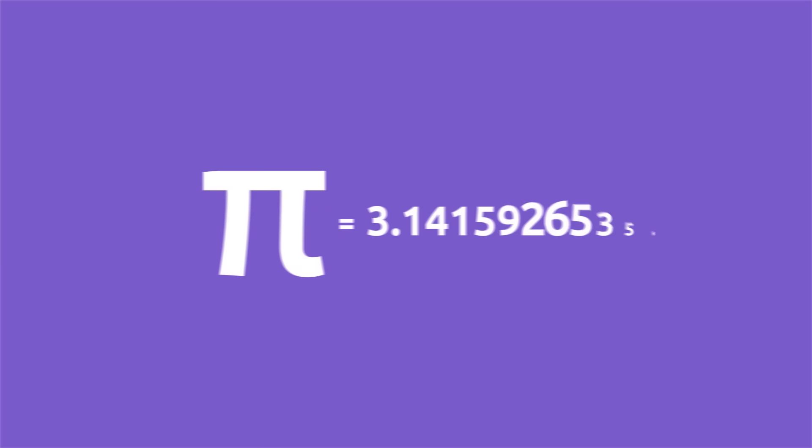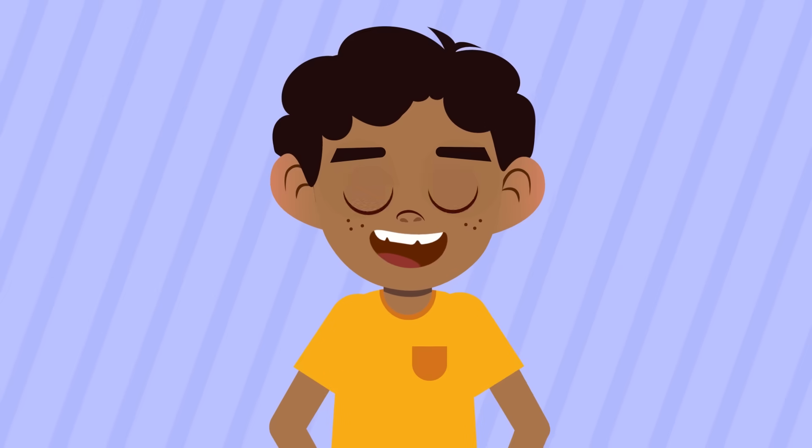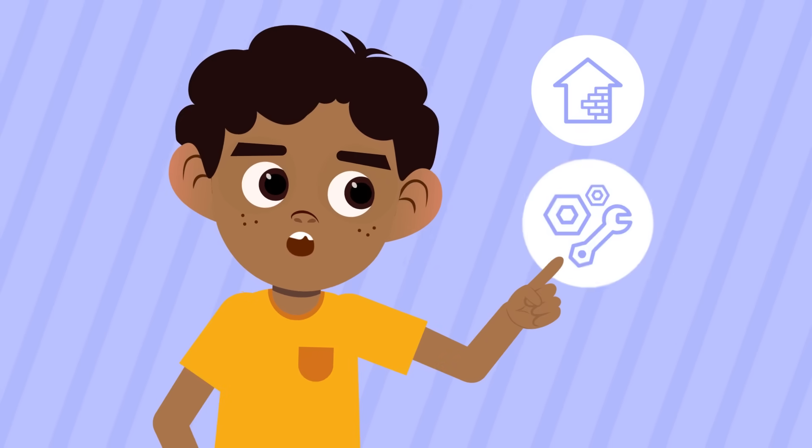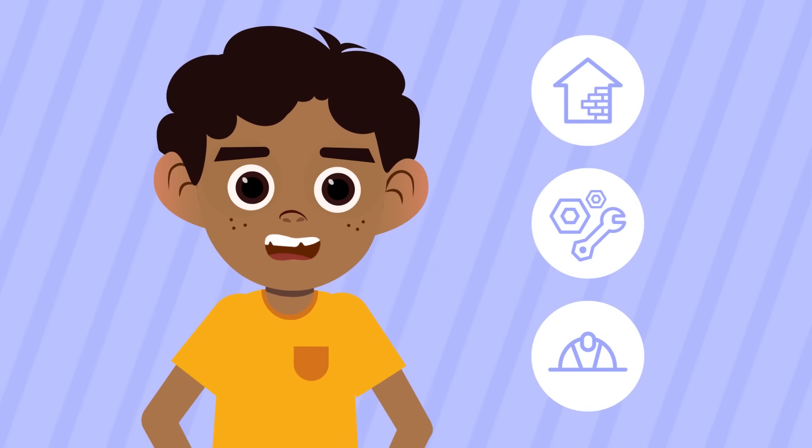In everyday life, this number is shortened to 3.14 to be expressed in a simple way and make calculations easier. Today we learned that number pi is one of the most important mathematical constants. Many architecture, mechanics, or engineering projects wouldn't be possible without the number pi.